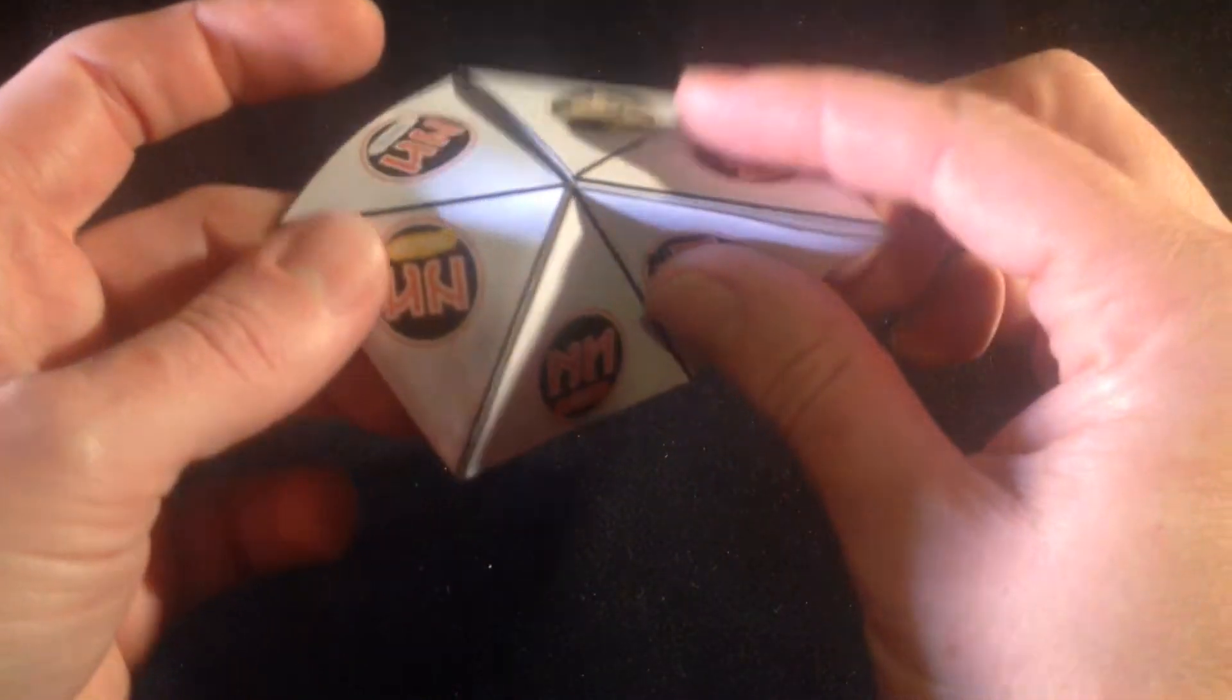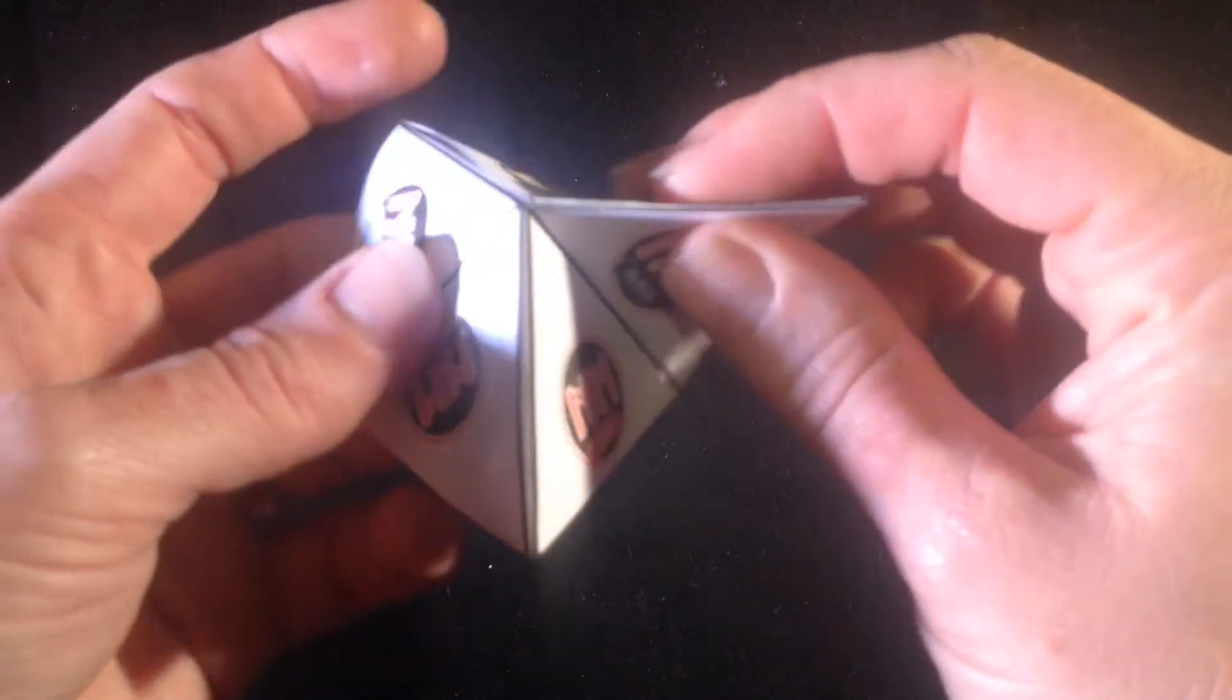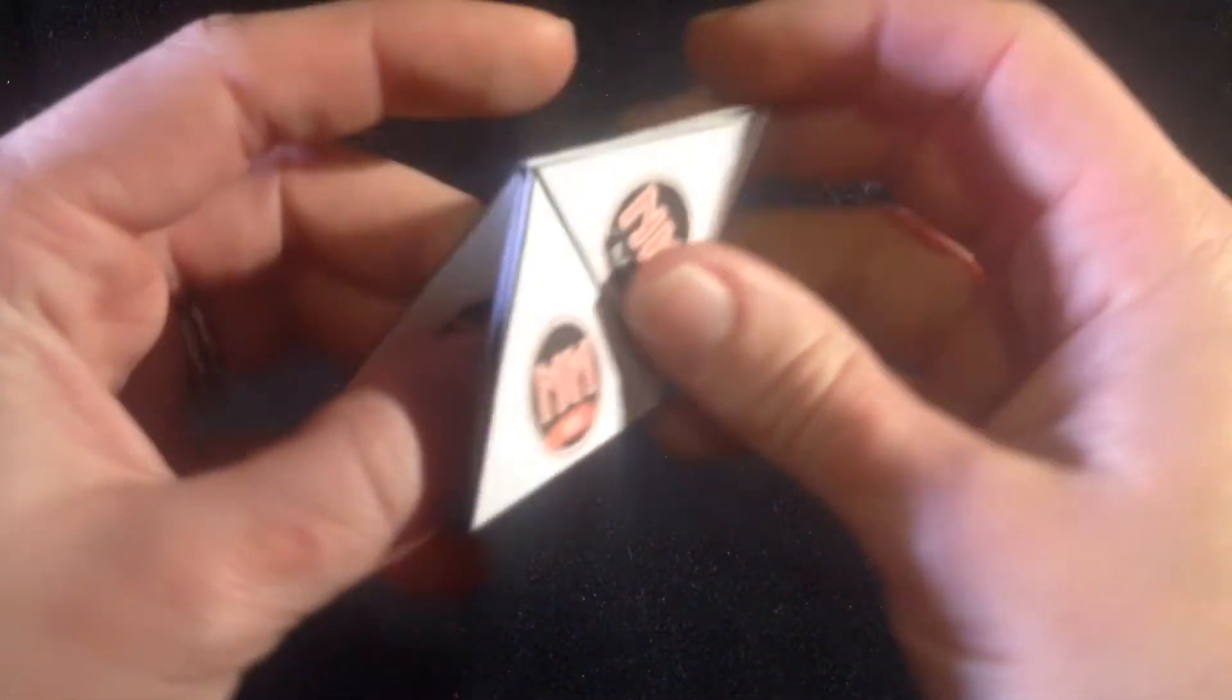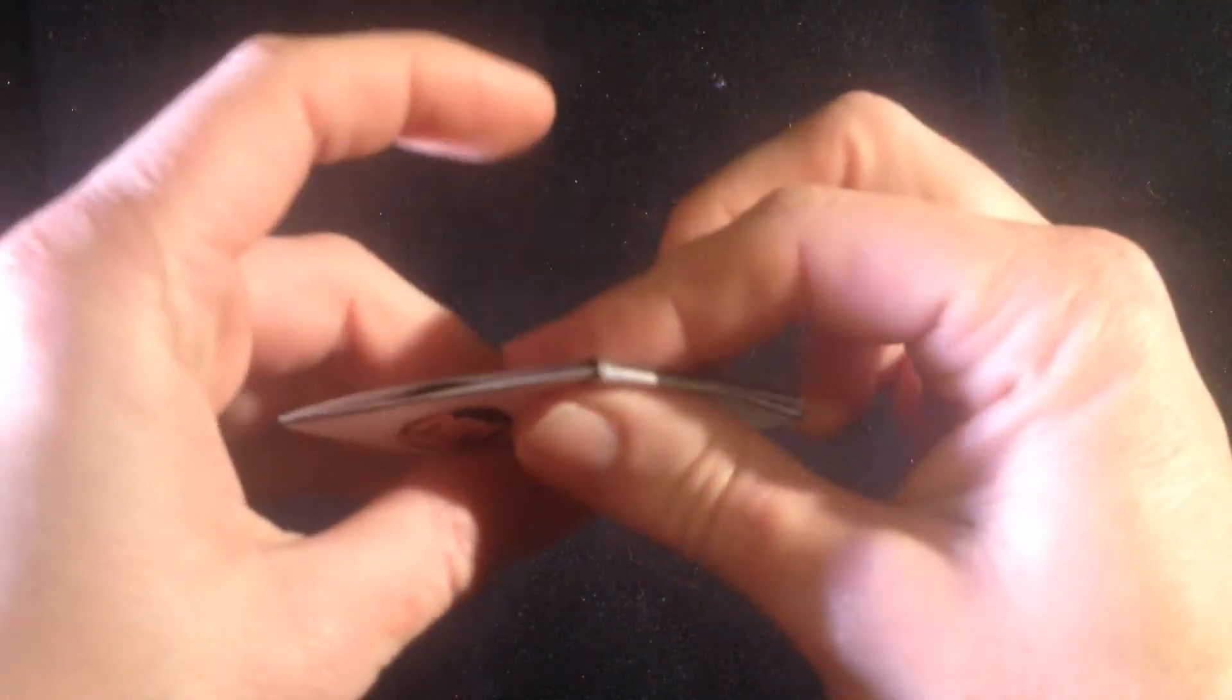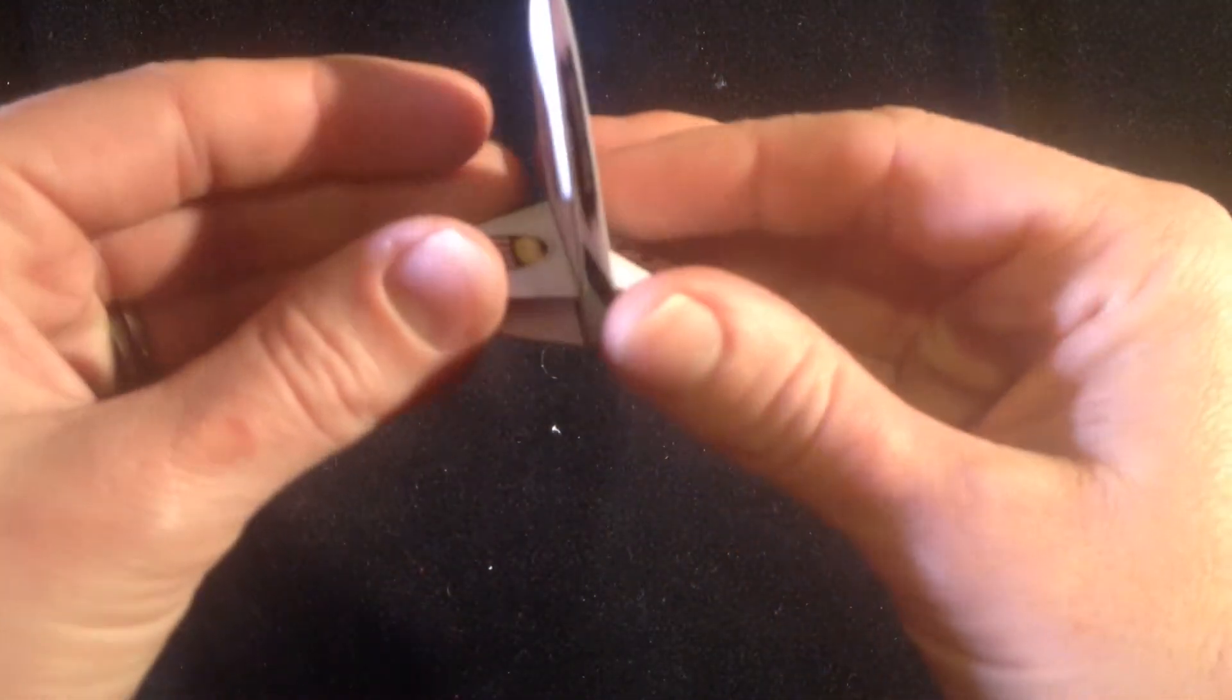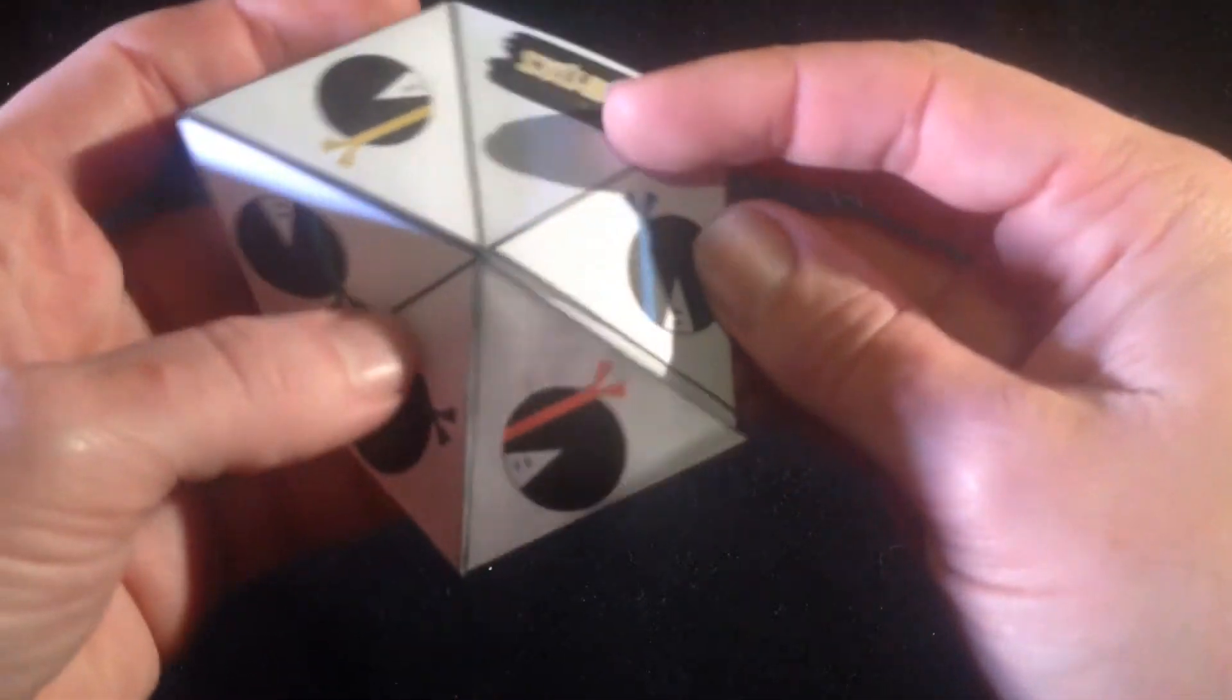Now it's time to flex your Trihexaflexigone. It may help to fold the lines again. To flex it, push three of the fold lines together and gently pull apart the top. If it doesn't work the first time you may need to fold the other three lines together.